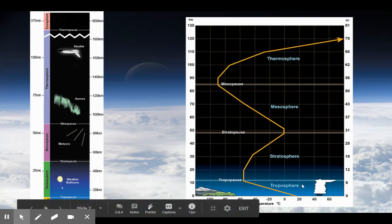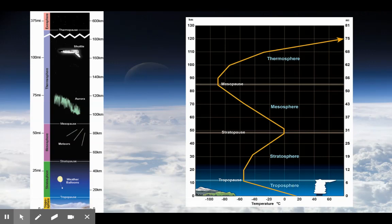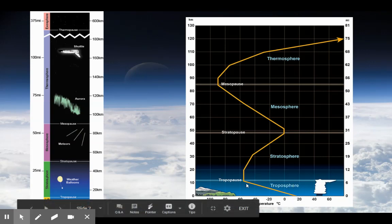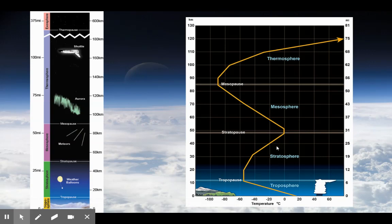These boundaries are actually determined by the temperature change — where the temperature stops falling and starts to rise, that's the boundary between the troposphere and stratosphere. For this class, just know that as you go higher in the troposphere, temperature drops — that's the lapse rate. As you go higher into the stratosphere, temperature increases.